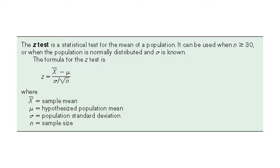For the Z-test, the observed value is the sample mean and the expected value is the population mean, assuming the null hypothesis is true. The denominator is the standard error of the mean. The central limit theorem allows us to use the standard normal distribution to approximate the distribution of sample means when n is greater than or equal to 30.